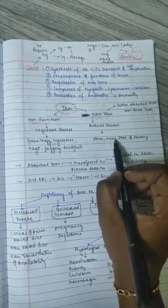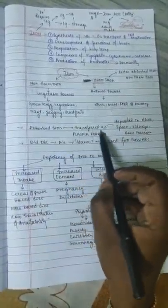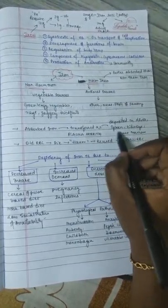The heme iron is from animal sources like liver, meat, fish, and poultry. This heme iron is better absorbed than non-heme iron. The absorbed iron is transferred as plasma ferritin and is deposited in liver, spleen, kidneys, and bone marrow.